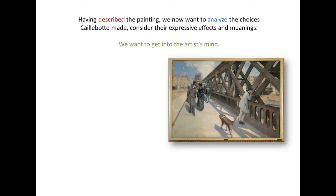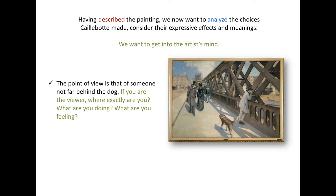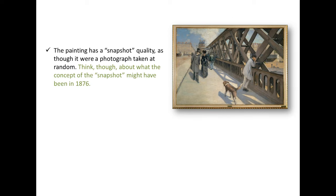We want to get into the artist's mind. The point of view is that of someone not far behind the dog. If you are the viewer, where exactly are you? What are you doing? What are you feeling? The painting has a snapshot quality, as though it were a photograph taken at random. Think, though, about what the concept of the snapshot might have been in 1876.